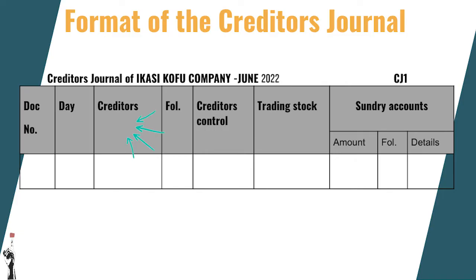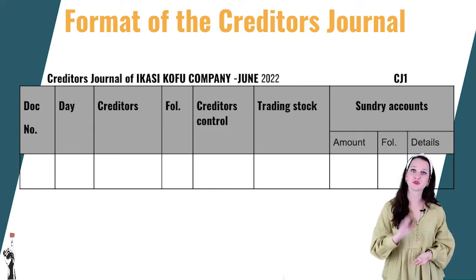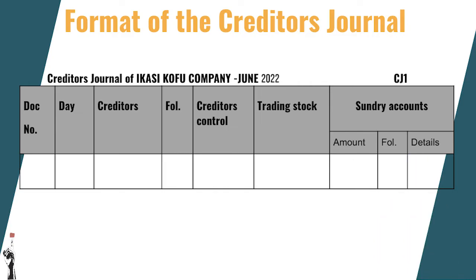The third column is the creditor's column, used to record the name of the creditor that we bought from. We also have a folio column for cross-reference — for example, to show the number of the account in the creditor's ledger. The creditor's account number only appears after posting to the creditor's ledger. The creditor's control column records the total that is on the invoice, and the total of this column should equal the sum of all the other columns' totals. The next column is the trading stock column, recorded separately for stock control purposes.